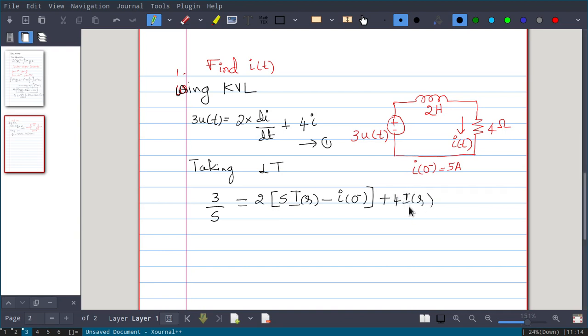So that plus 4 into i(s), plus 4 into i(s). Now you solve for this i(s). So that is 3/s equals 2 into s i(s) minus i(0-). i(0-) is given in the problem, that is 5, plus 4 into i(s).